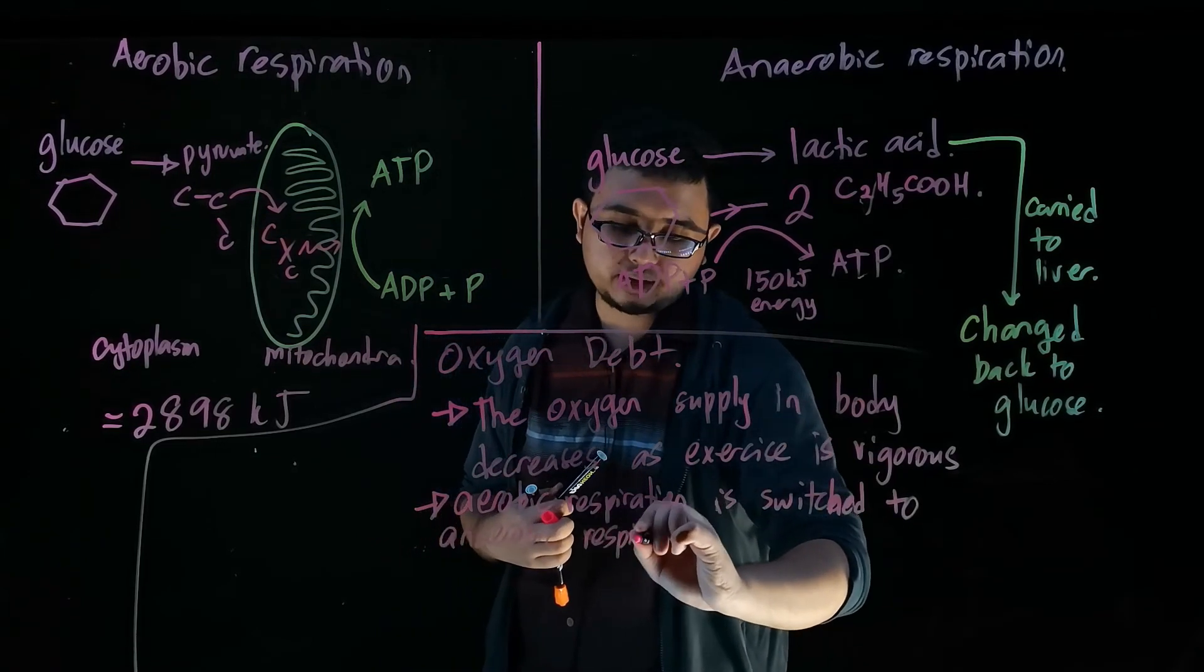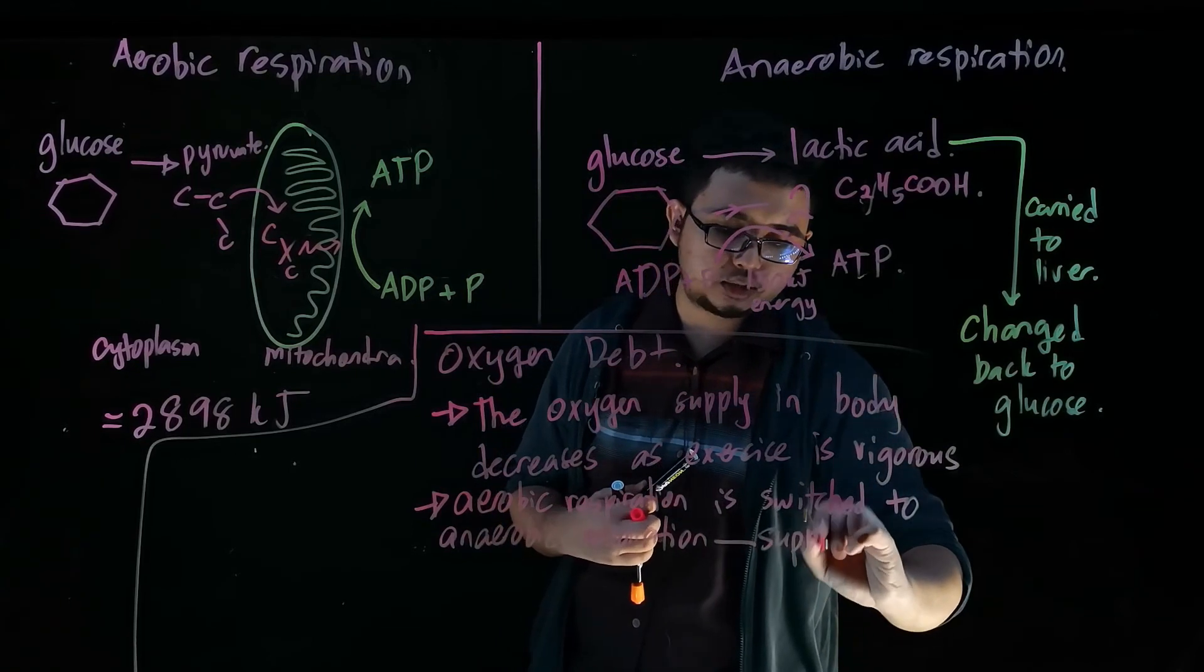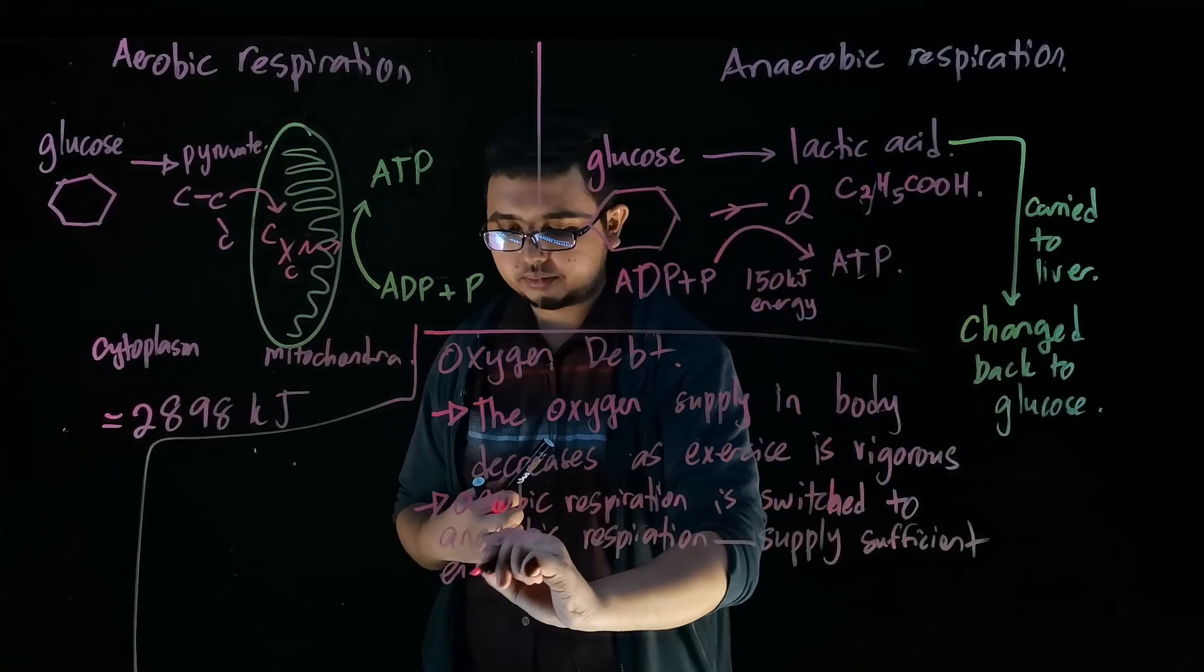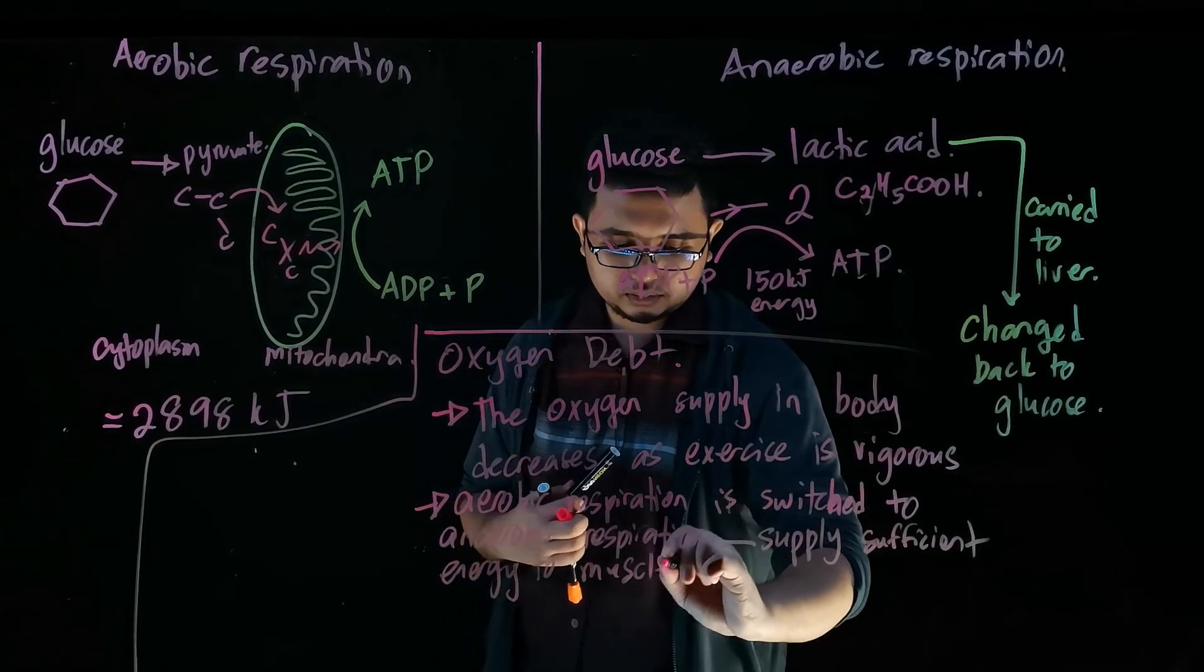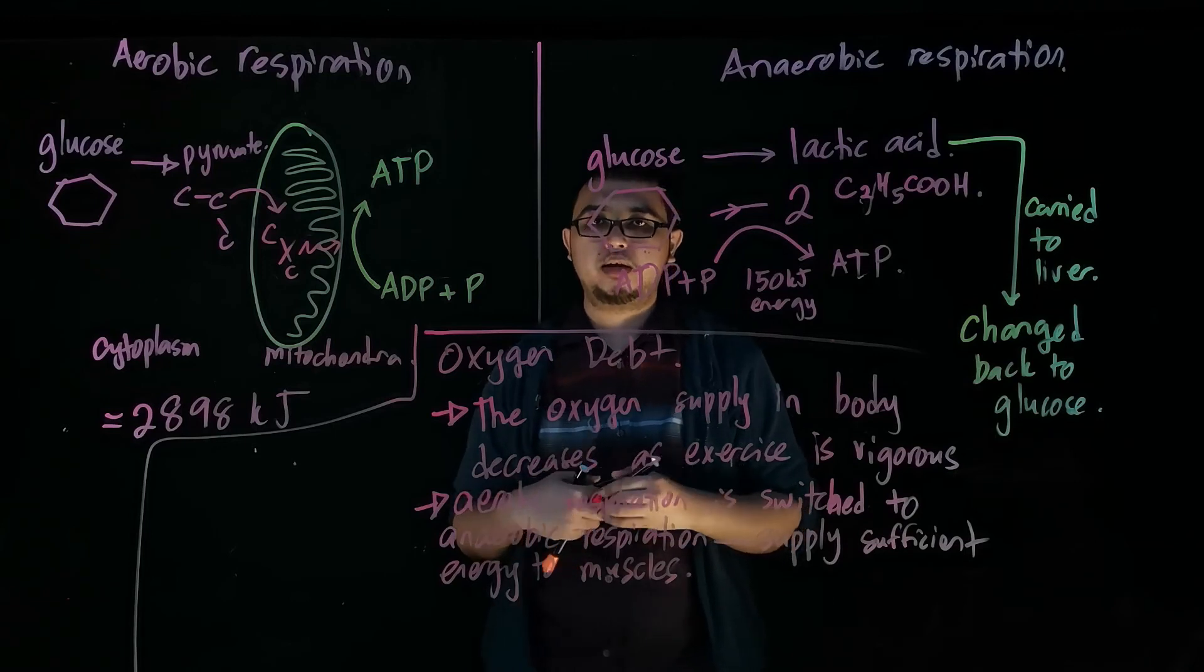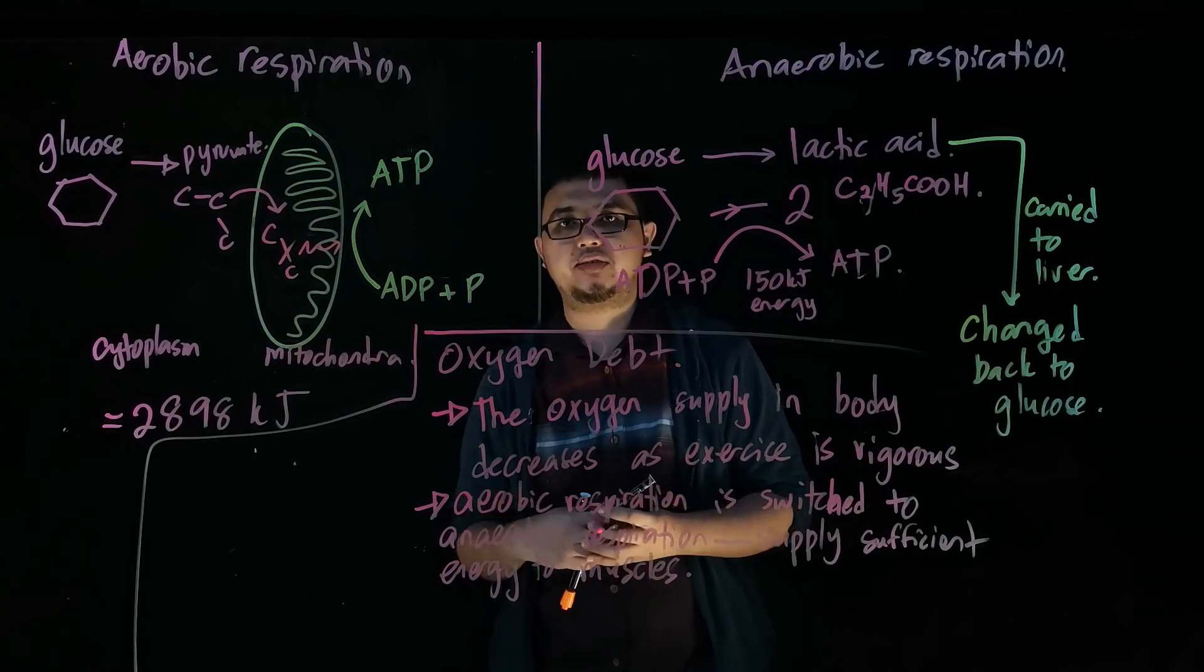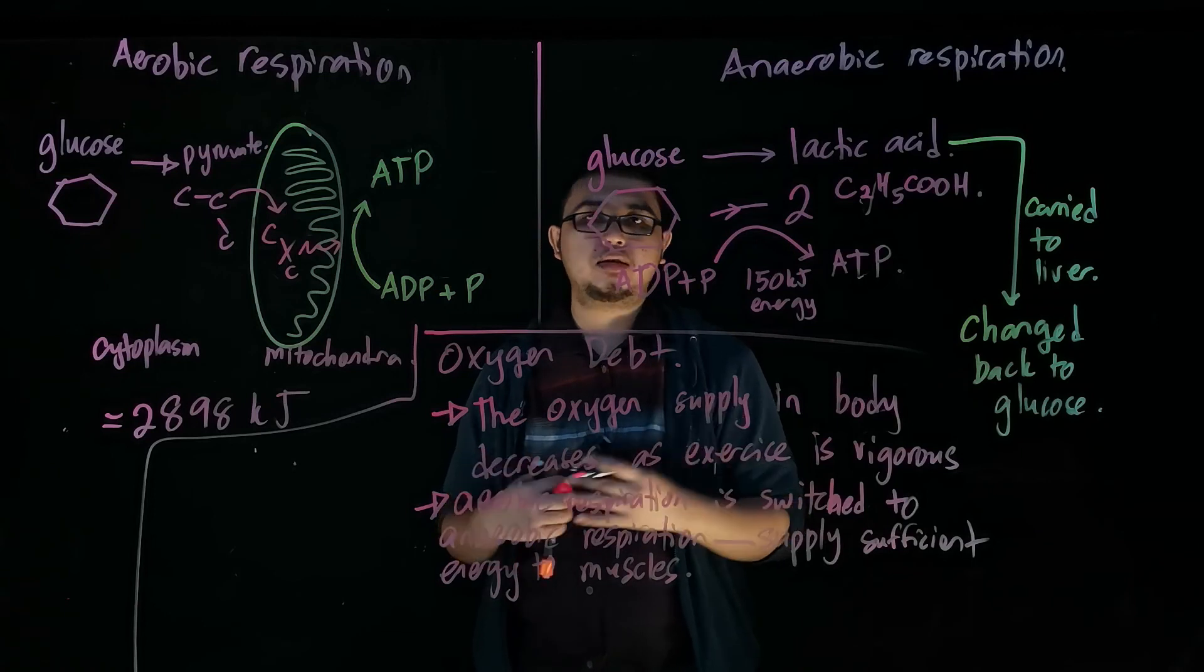The reason this takes place is so that it can supply sufficient energy to muscles. Your muscle can still operate without any oxygen as long as it has enough ATP. It can still carry out the contraction and relaxation processes, but this is very detrimental to our muscle tissue.